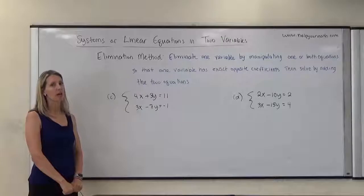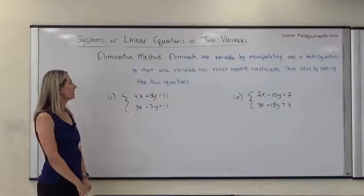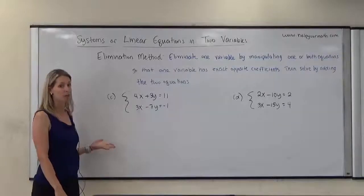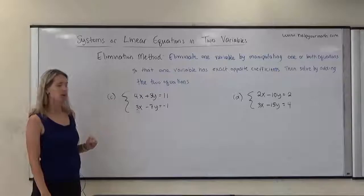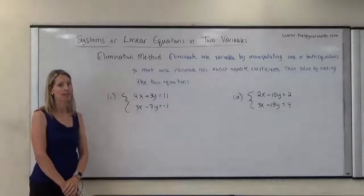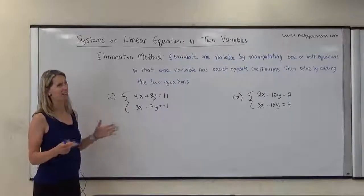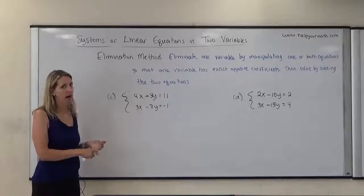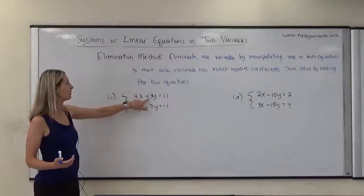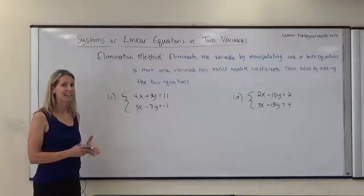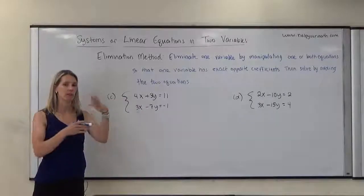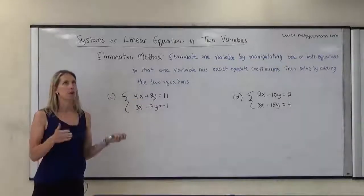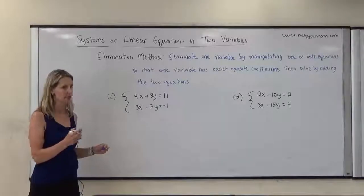We're going to look at a few more examples of solving a system of equations using the elimination method. With the elimination method, we eliminate one of the variables by manipulating one or both equations so that one variable has exact opposite coefficients. In example C, we have 4 and 3 as our coefficients of x, and 3 and negative 7 as our coefficients of y. Neither 4 and 3 nor 3 and 7 are particularly compatible numbers, so it doesn't matter which variable you choose to eliminate. I'm going to choose to eliminate y because one coefficient is positive and one is negative — I can rewrite 3 and 7 to both become 21 by multiplying 3 by 7 and 7 by 3.